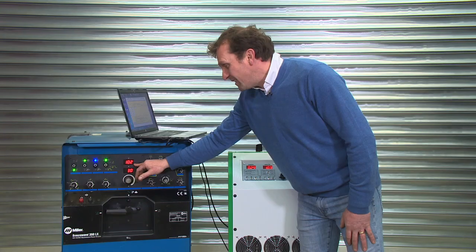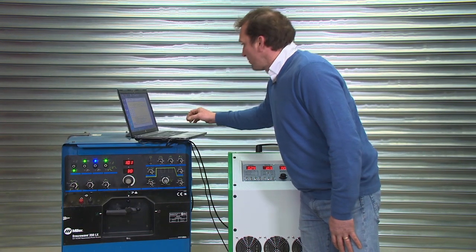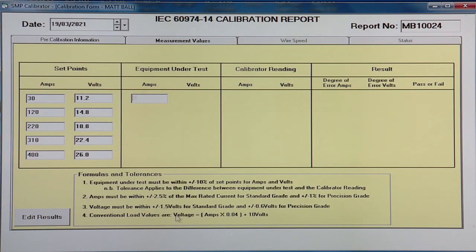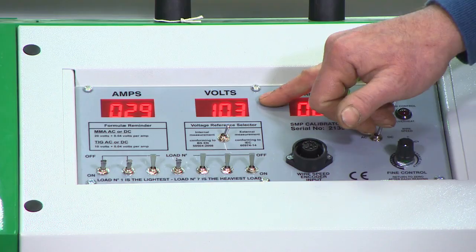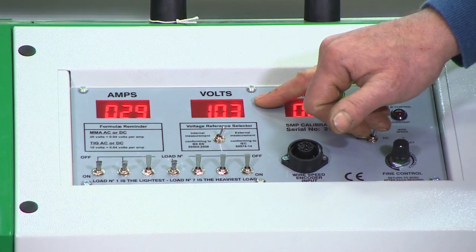So now we have the welder reading 10.2 and 30 amps. We put that in the program. And the calibrator's reading 29 amps and 10.3.